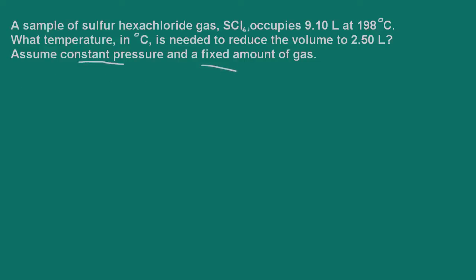So if we were to use the combined gas law, what we have is P1V1 over T1 equals P2V2 over final temperature. Well here we're told that we have a constant pressure and a fixed amount of gas, so in this case my pressure terms would cancel out.